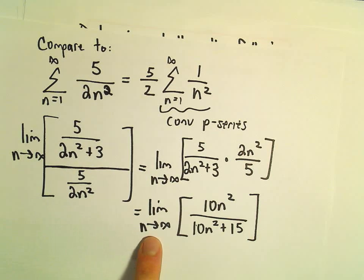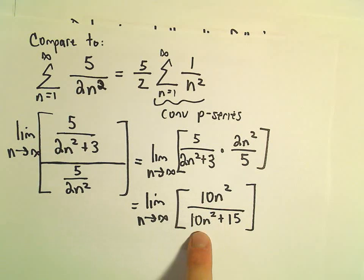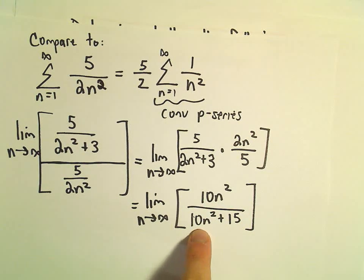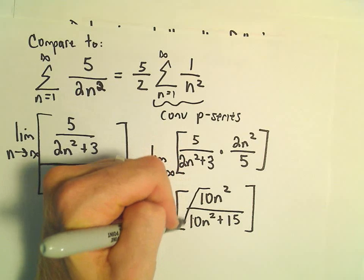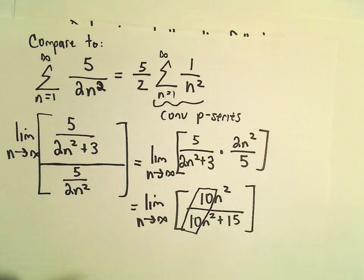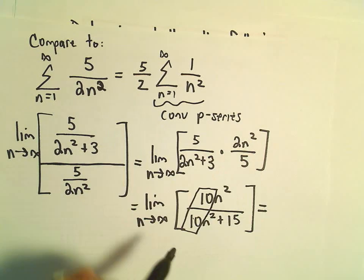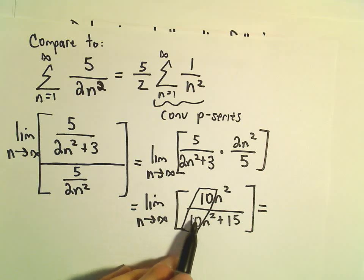Well, as n goes to infinity, since the degree of the numerator equals the degree of the denominator, that limit is simply going to equal the ratio of the leading coefficients. So the limit's going to equal 10 over 10.